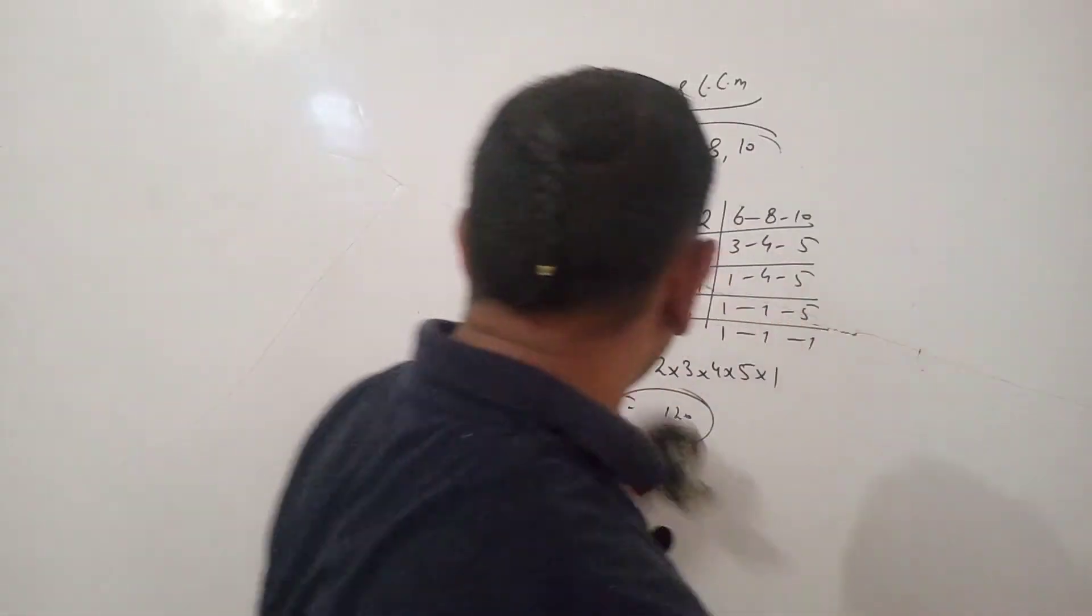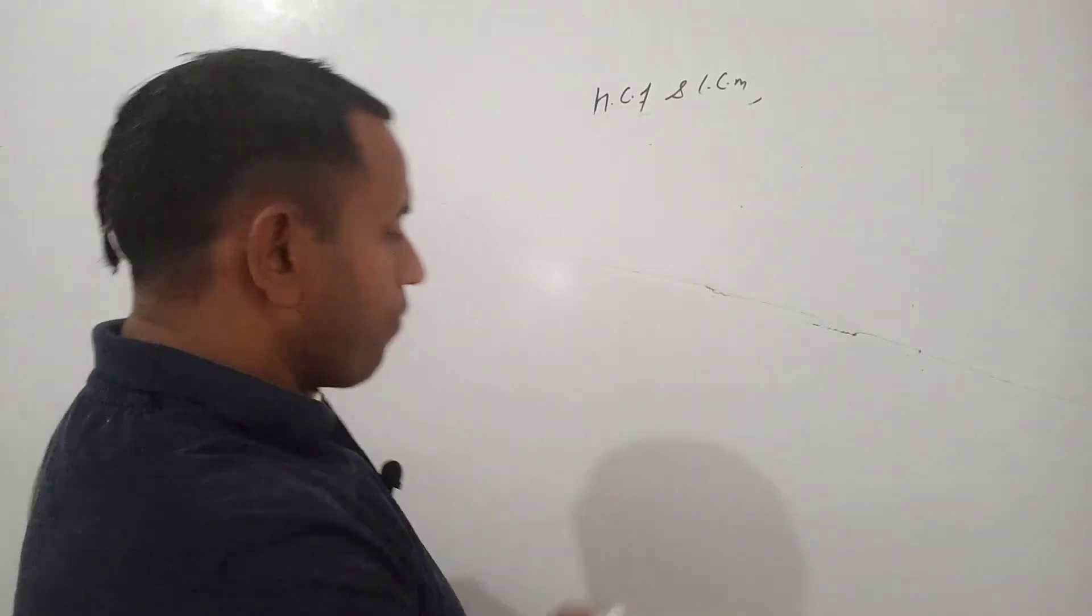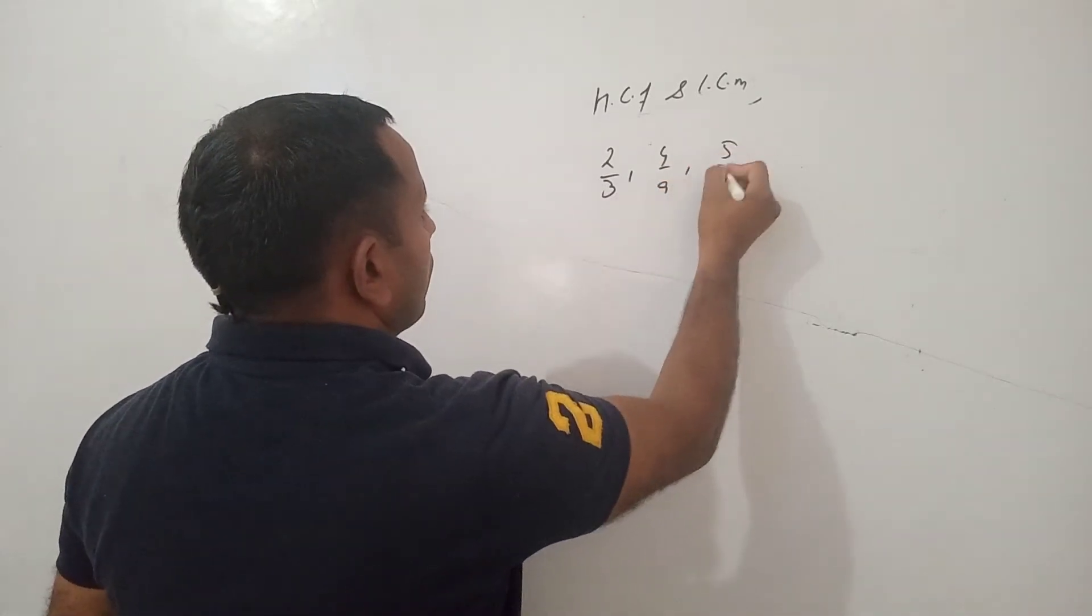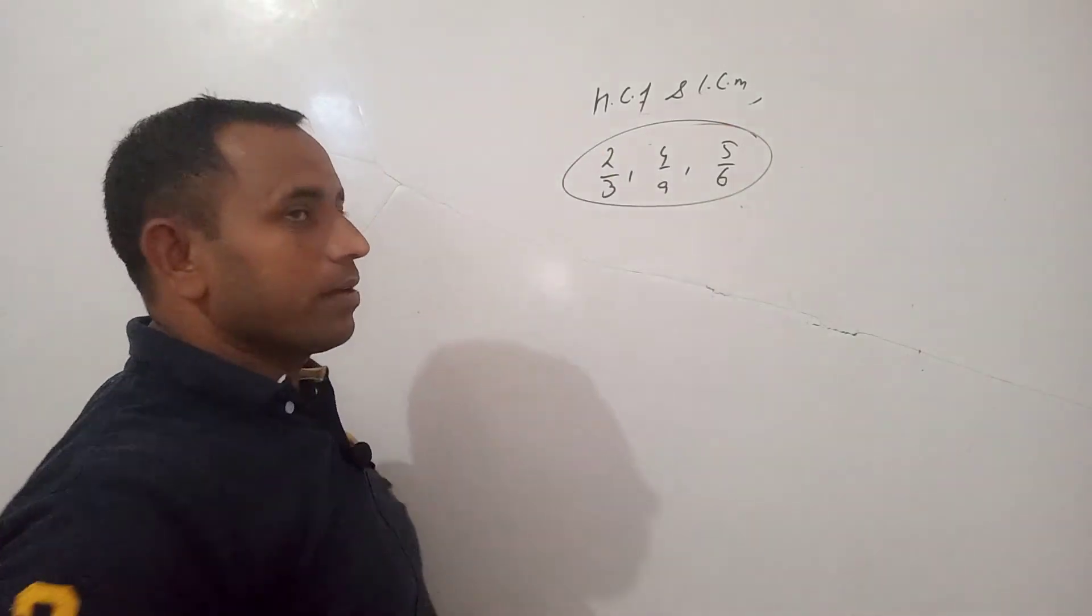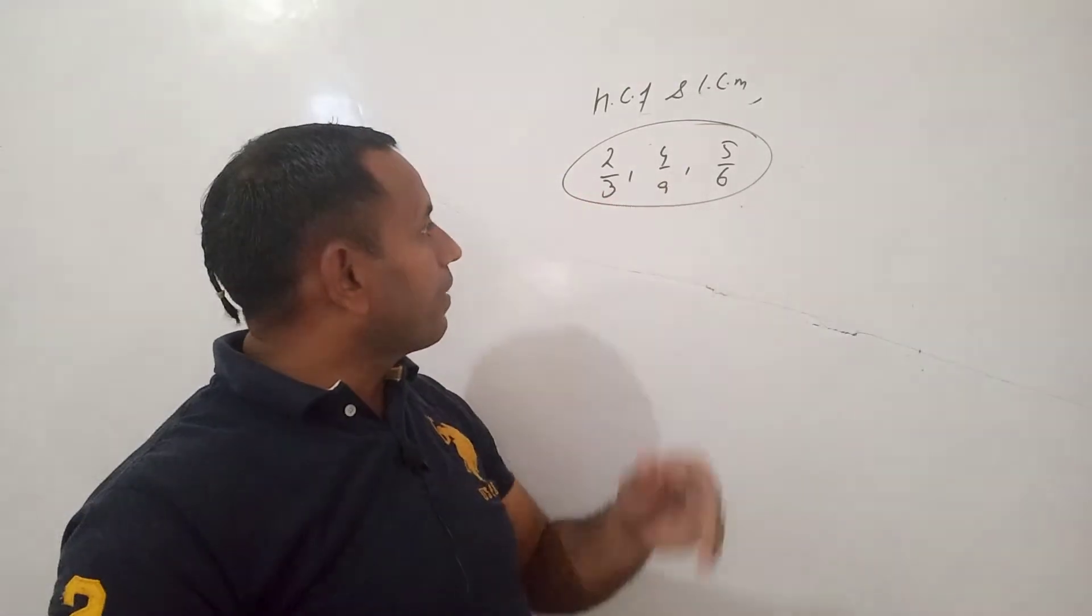If we have to find the HCF and LCM of a fractional number, so what is the method? These are the fractional numbers. So now find out the HCF and LCM of these numbers.